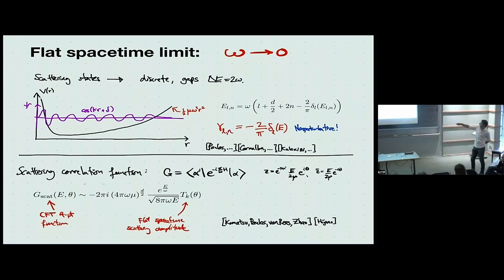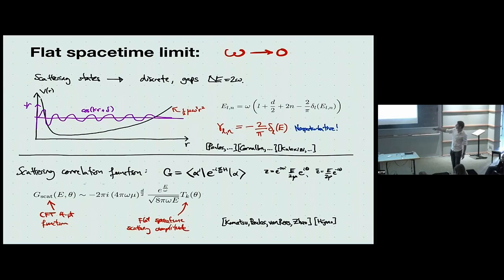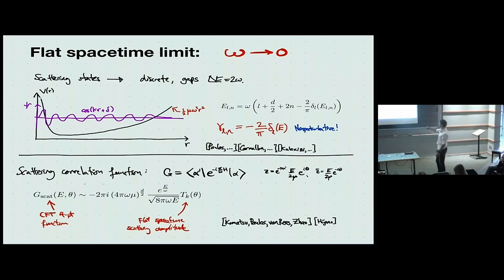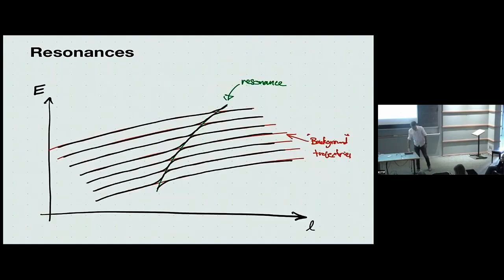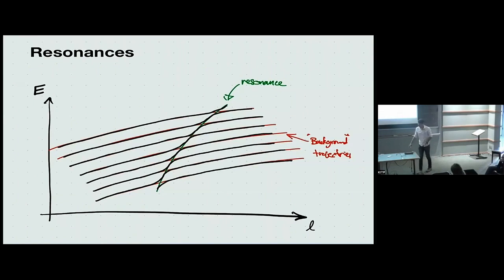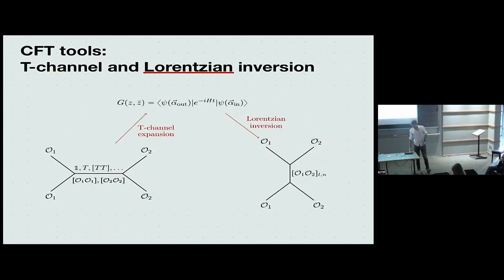For inelastic effects, there's a more sophisticated formula. There's also a correlation function where again anomalous dimension equals phase shift — a very simple relation — and a CFT four-point function equals scattering amplitude, an extremely simple relationship between flat spacetime data and CFT correlators. Another cute non-perturbative feature is resonances: you can see how resonances appear in the CFT spectrum via characteristic reconnections of Regge trajectories — a nice picture of how metastable states in flat spacetime get stabilized by the ADS potential.